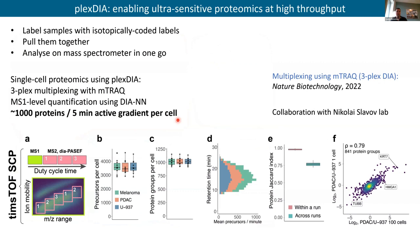One way we addressed throughput is with multiplexing. In collaboration with Nikolaj Slavov and Luka, we were able to multiplex samples with plexDIA using mTRAQ. This works fine with DIA — you get the same throughput benefit as with DDA, and data completeness is also better. With a 30-minute nanoflow method and 15-minute active gradient, we were able to get about 1,000 proteins from single cells.